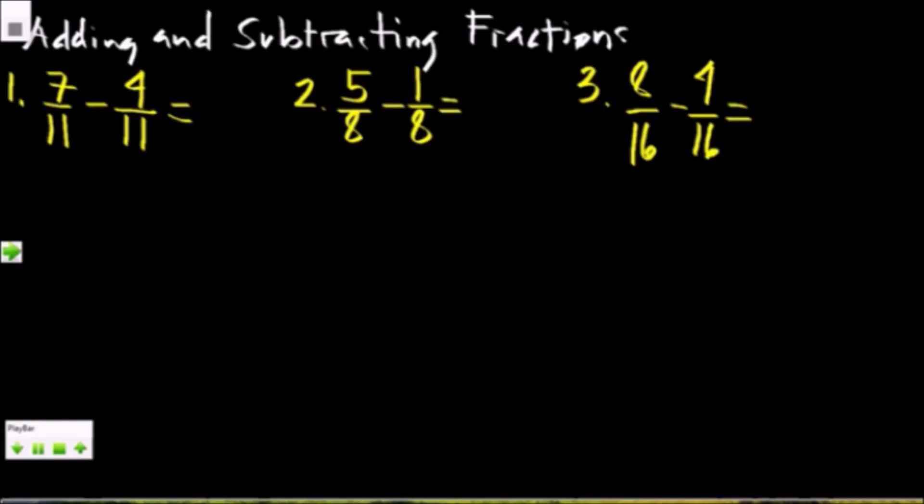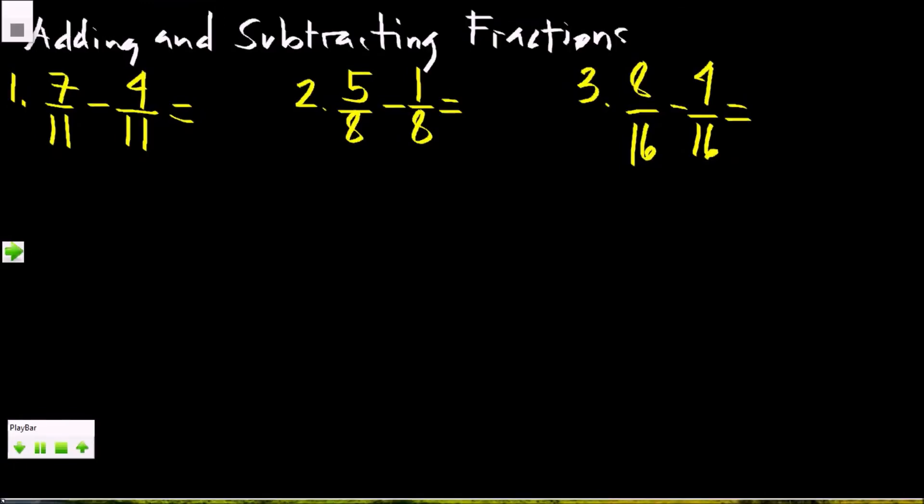Let's proceed to subtracting fractions with the same denominator or similar fractions. We have here 7/11 minus 4/11, 5/8 minus 1/8, 8/16 minus 4/16. 7 minus 4 is 3, copy the common denominator, 3/11.